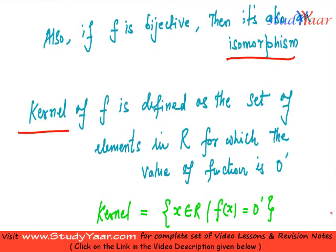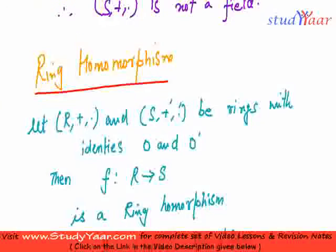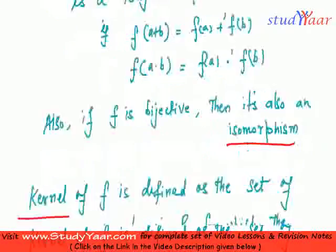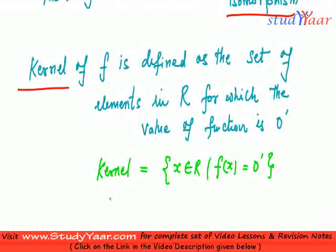What is 0 dash? 0 dash is the identity element of S. So if you have to write it in predicate logic, it basically is the set of elements in R such that the value of the function is equal to 0 dash. So that is your kernel.